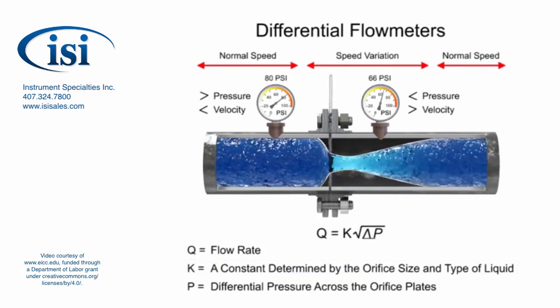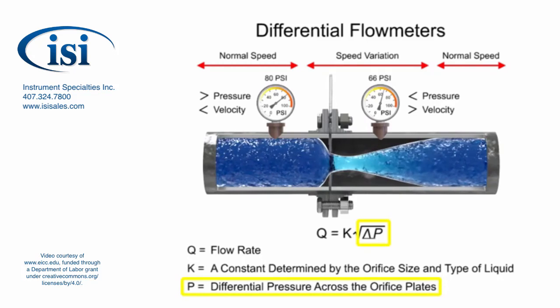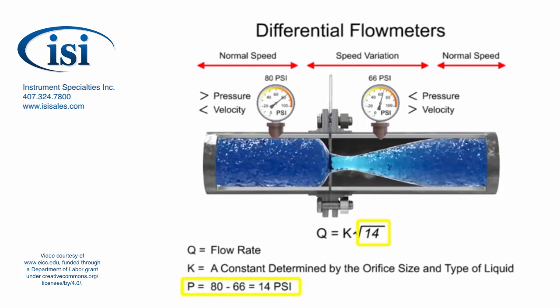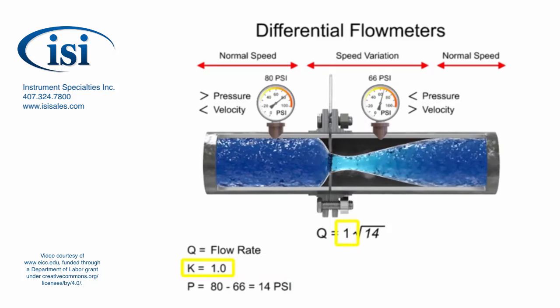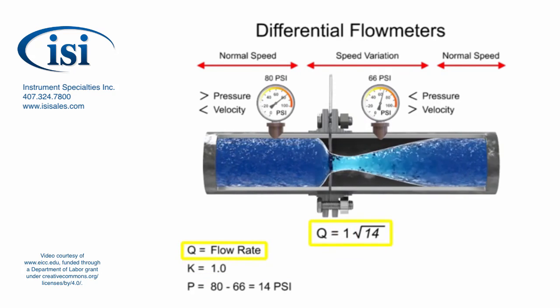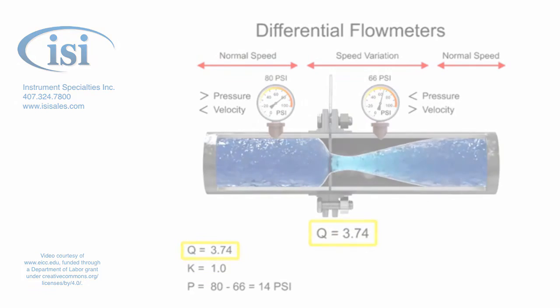For example, if the differential pressure increases by 14 psi with a k factor of 1, the flow rate is increased by 3.74.